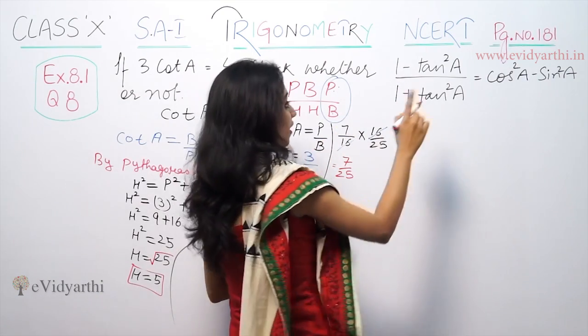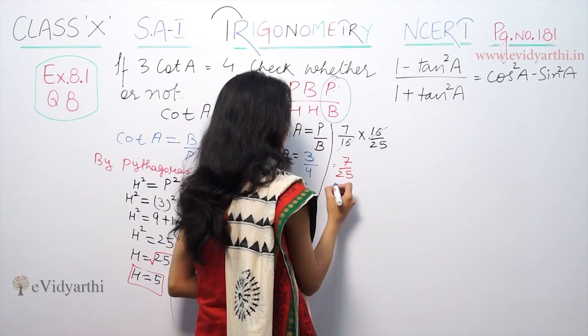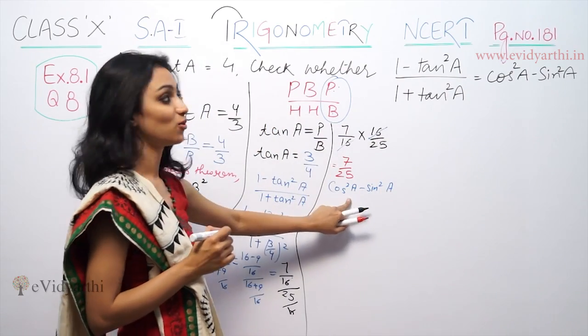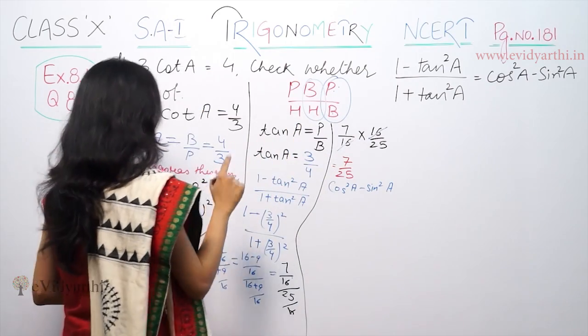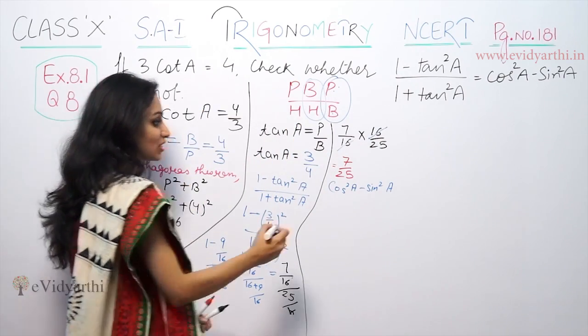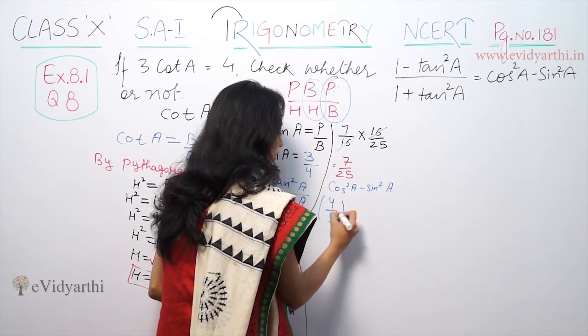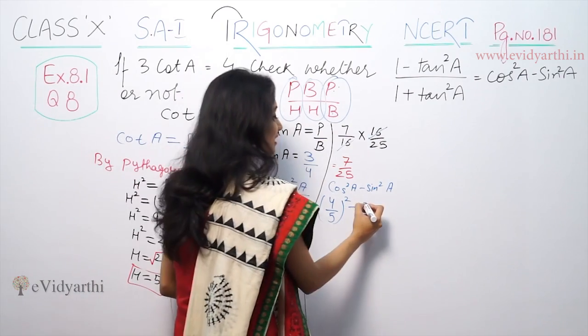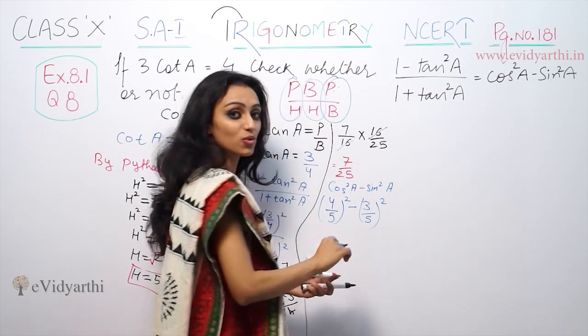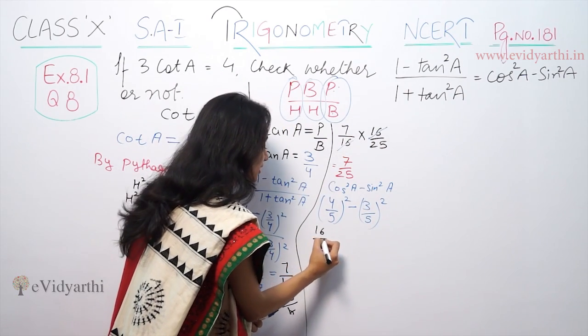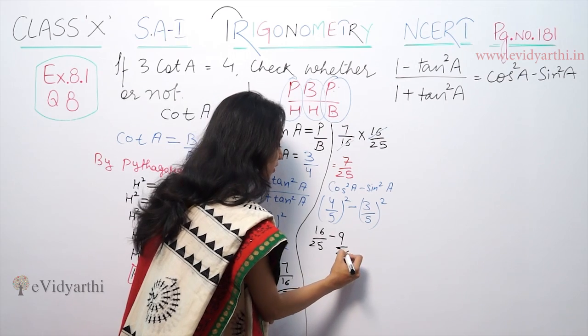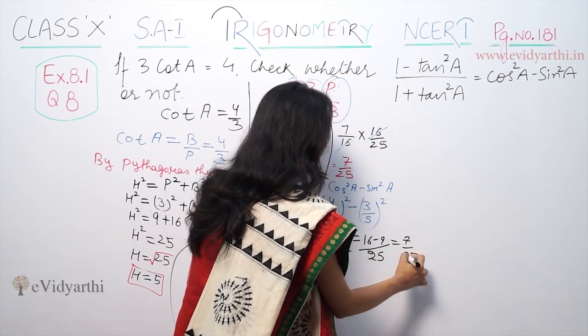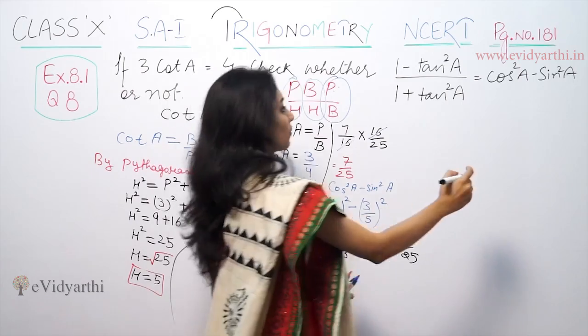Now cos square A minus sin square A. Cos A equals base by hypotenuse, which is 4 by 5. Sin A equals perpendicular by hypotenuse, which is 3 by 5. So we have 4 squared is 16 upon 25 minus 9 upon 25, which equals 16 minus 9 is 7 by 25. This is also equal to 7 by 25.